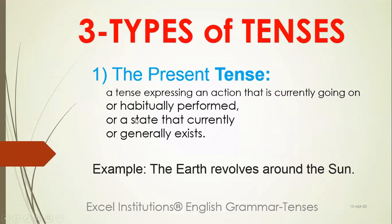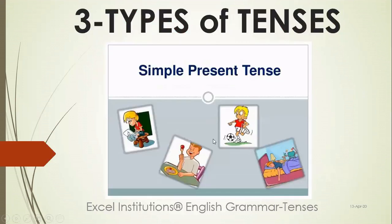The three types are: the present tense, the past, and the future. For example, 'Earth revolves around the sun' — that is a truth, so it must be in present tense. Present tense refers to whatever is happening right now — he is playing, sleeping, reading, eating. Whatever he is doing right now, that is present tense.